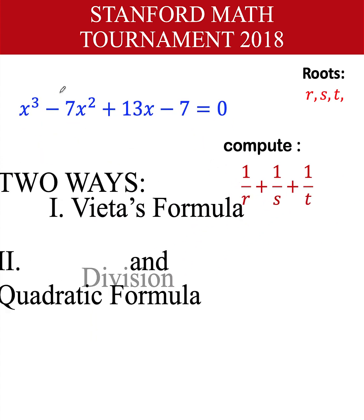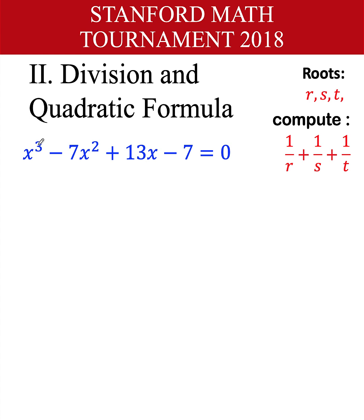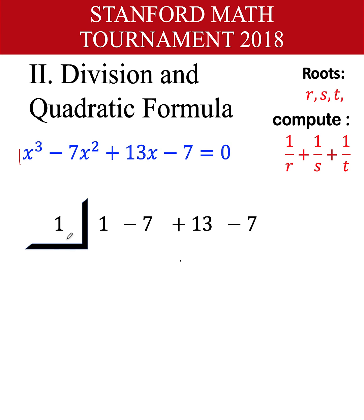For the second method using synthetic division and the quadratic formula: make sure the terms are in descending order — degrees 3, 2, 1, and 0. Take the coefficients: 1, negative 7, positive 13, and negative 7. From the rational root theorem, possible rational roots are factors of the constant term over the leading coefficient, and one candidate is positive 1. Let's test it.